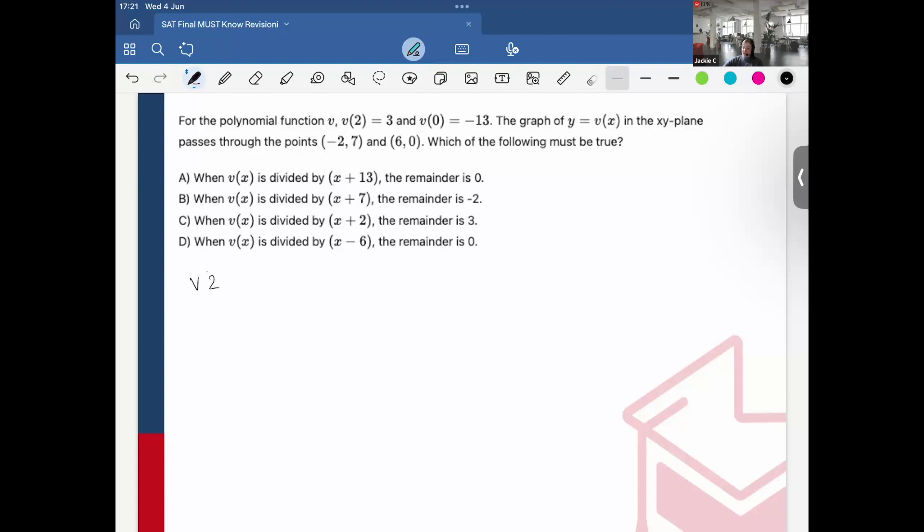Okay, so here I'd be like, okay, so I have v(2), that equals 3. That's given to us in the problem. v(0) is equal to negative 13. And just to put the other coordinates given to us, v(negative 2) is equal to positive 7, and v(6) is equal to 0.